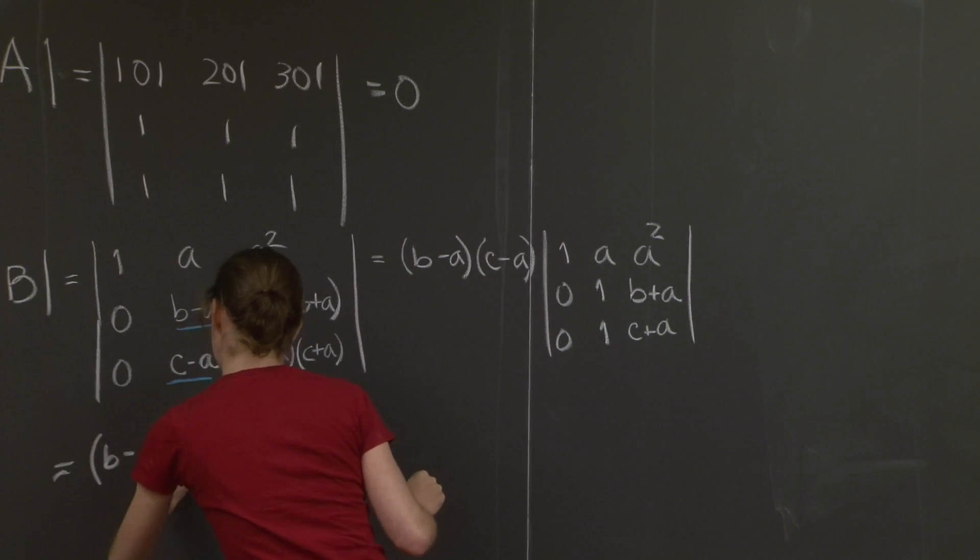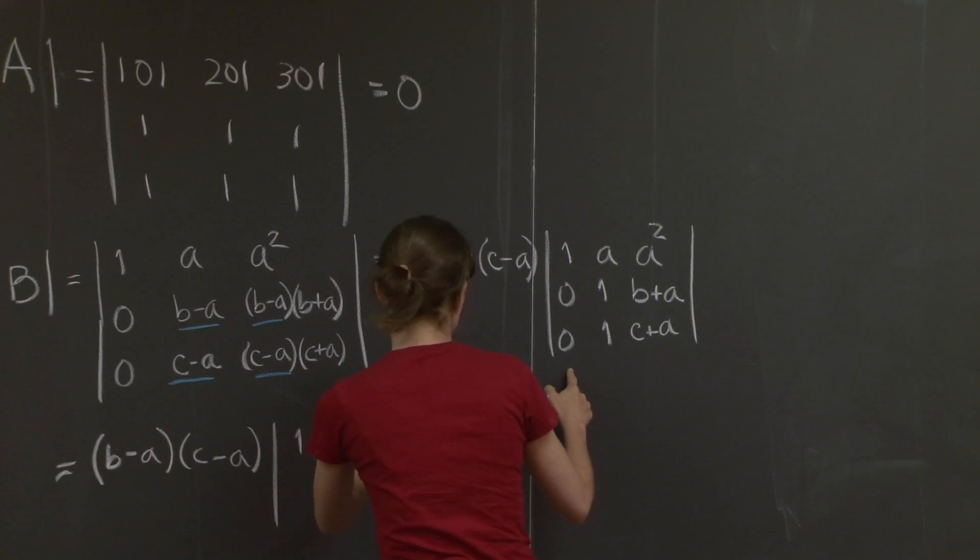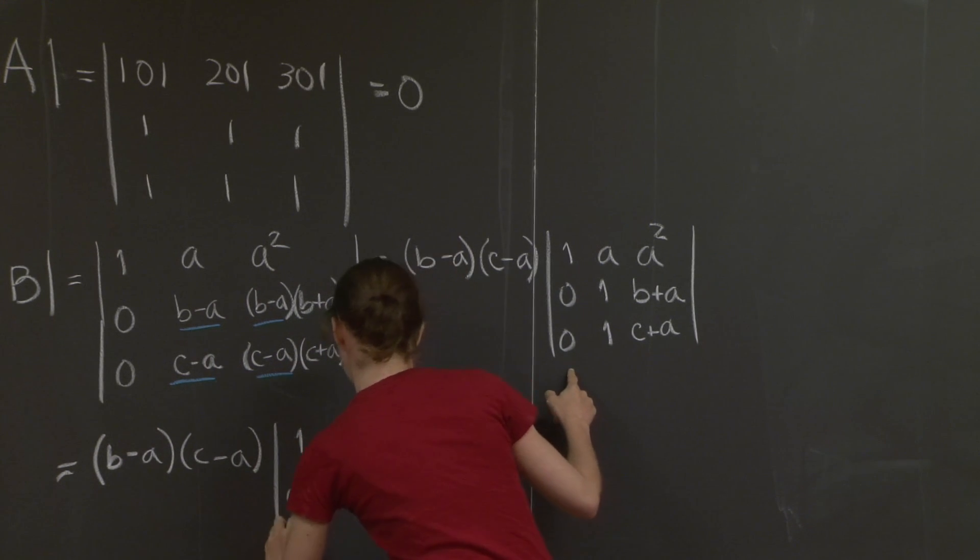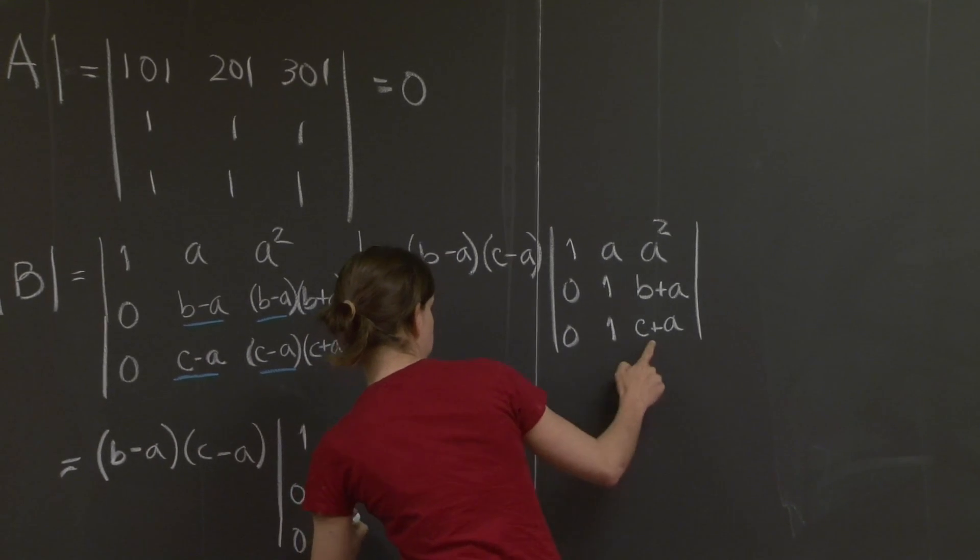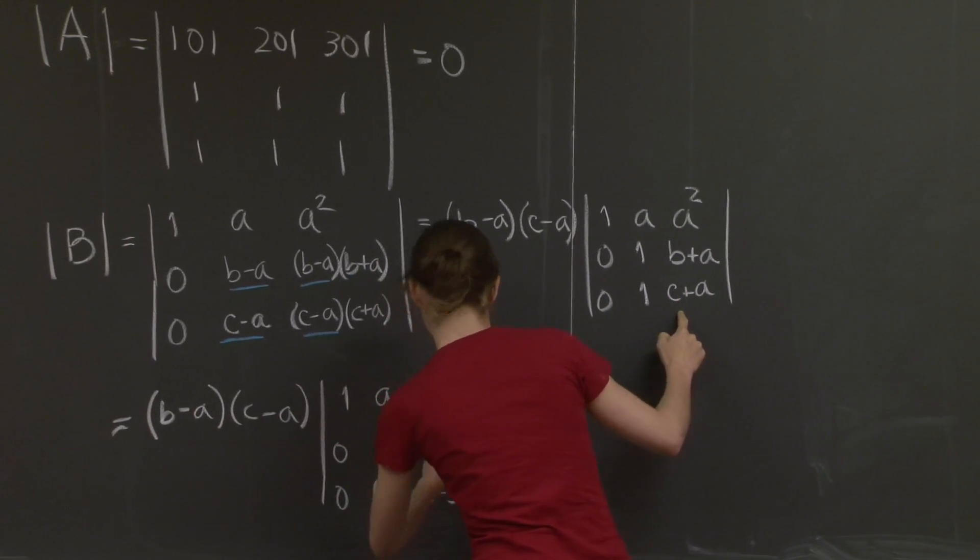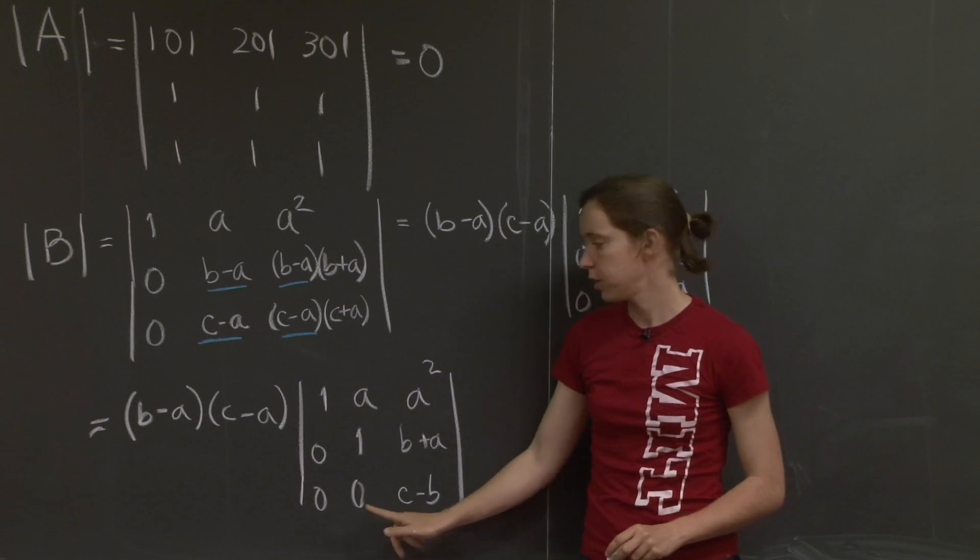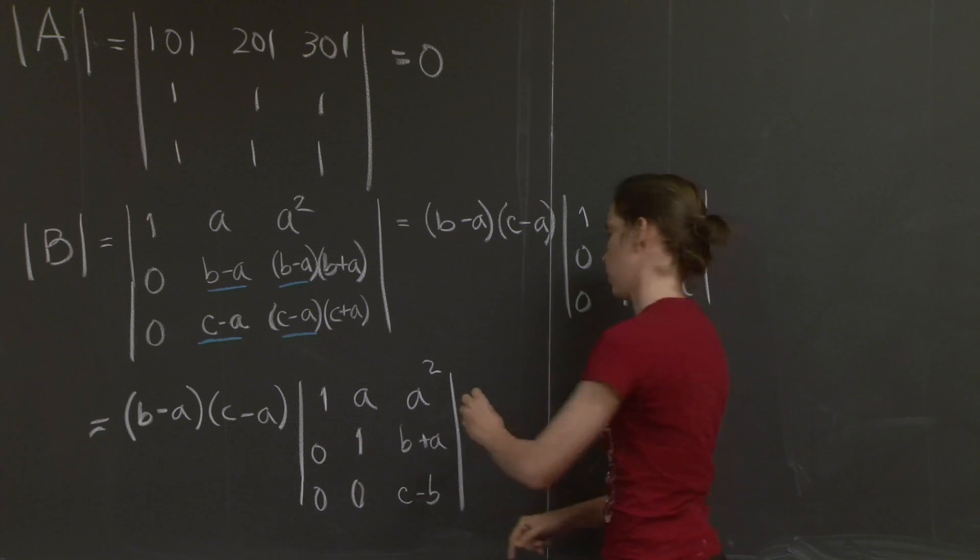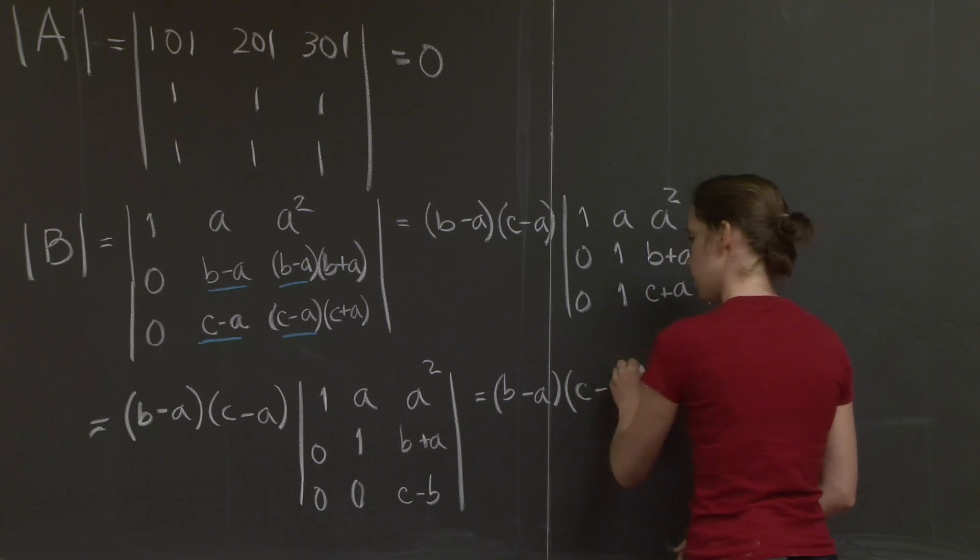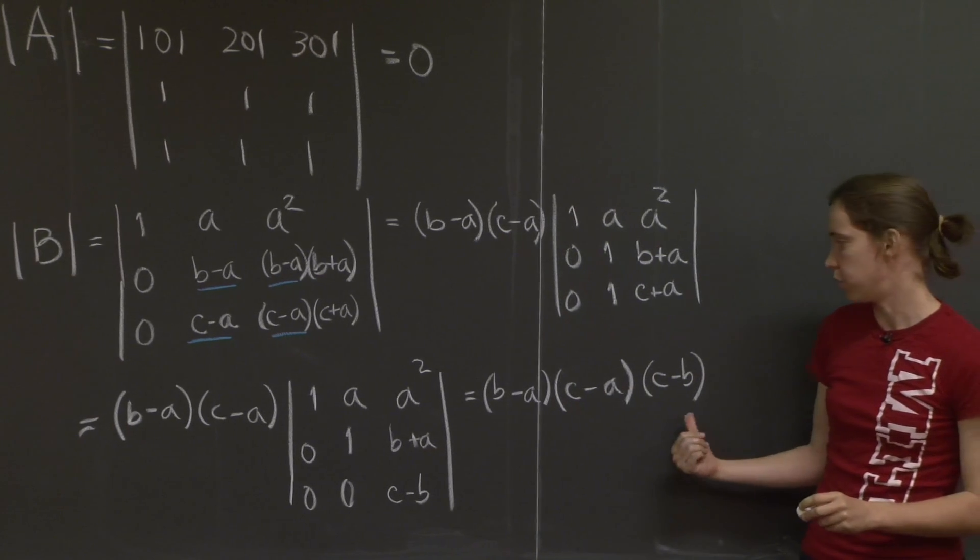B minus A, C minus A, 1, A, A squared, 0, 1, B plus A, 0, 0, C plus A minus B plus A is C minus B. All right? So the determinant of this matrix is now 1 times 1 times C minus B. So we get B minus A, C minus A, C minus B, which has a really nice formula.